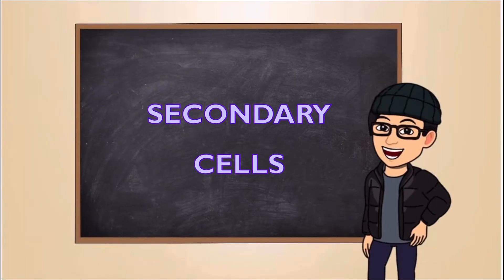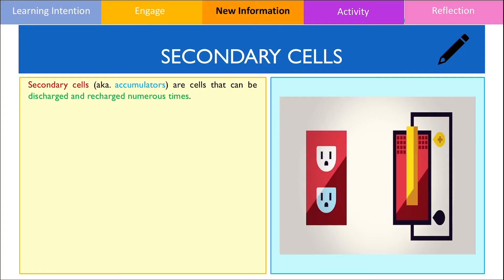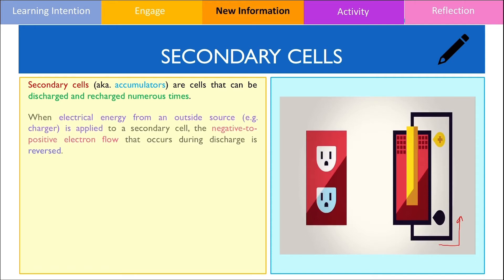In the second half of this video, I will now discuss secondary cells. Secondary cells, also known as accumulators, are cells that can be discharged and recharged numerous times. Secondary cells behave in the same way as a primary cell when discharging, where electrons flow from the negatively charged anode to the positively charged cathode. However, when the reactants have been used up, we can regenerate or recharge the battery by supplying electrical energy from an external source like a charger or a power outlet.